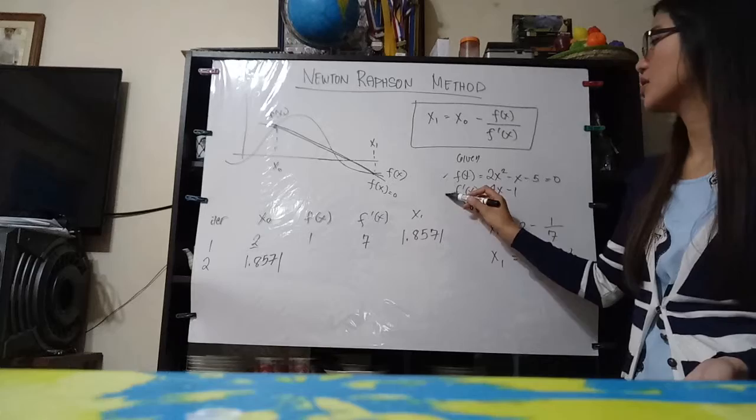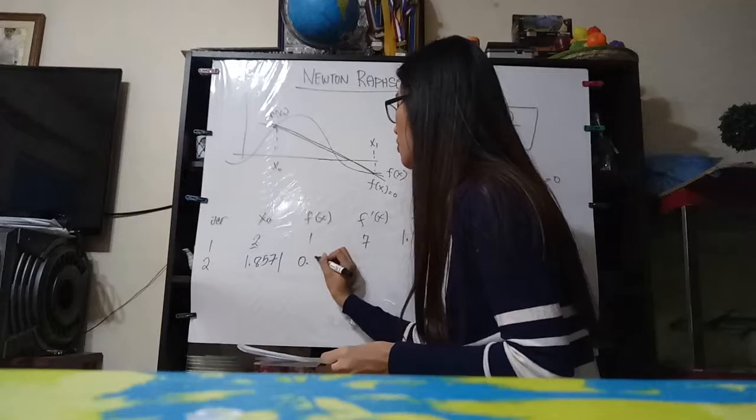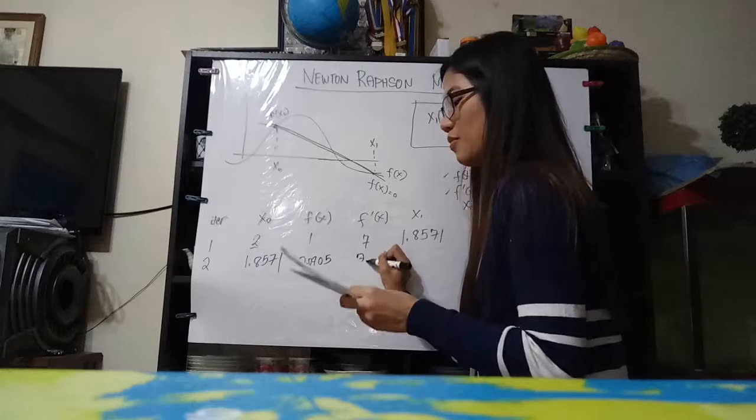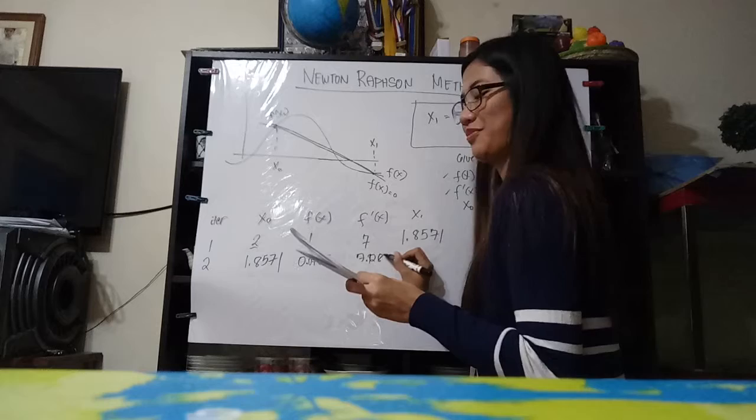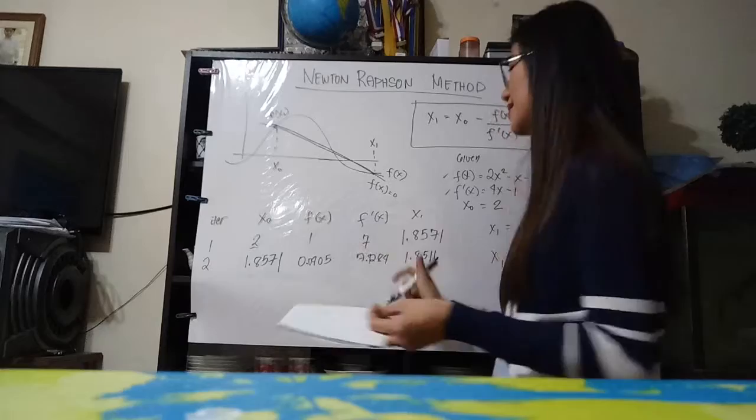Again, we are going to substitute this value to our function here and to our derived function, and that would result to 0.405 here, and 7.428 for the derivative. And then we have 1.8516.